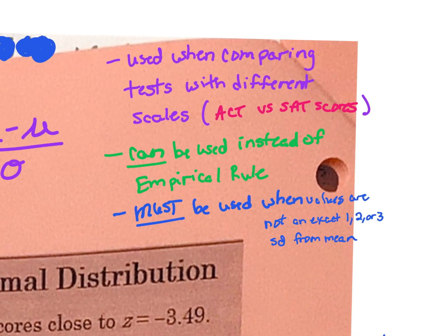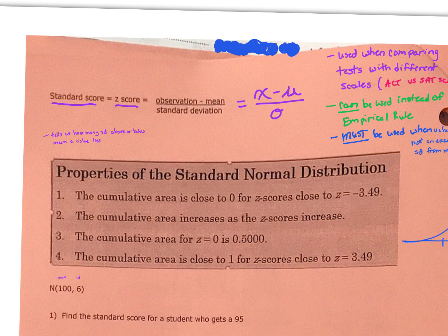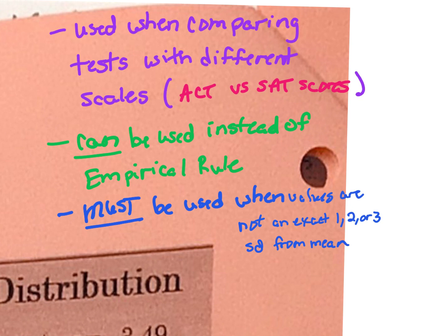A few pieces of information you need to be aware of. We use standard scores when we want to compare things that aren't being scored or measured similarly — this gives us a way to compare things that are considered apples and oranges. We standardize these scores so that we can make those comparisons. The best example is if you were to take both the ACT and the SAT: you can determine your standardized score for each, where your score lies in relation to the mean, how many standard deviations above or below the mean your score is, and then compare whether you did better on the ACT or the SAT.